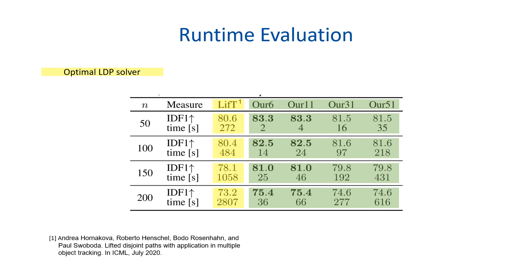If we compare the time and the IDF1 metric, we see that our approximate solver is dramatically faster than the optimal solver while getting mostly the same IDF1 metric. Interestingly, it showed that sometimes a sub-optimal solution after some iterations is even better with respect to the tracking metric, but I need to clarify this is not always the case.